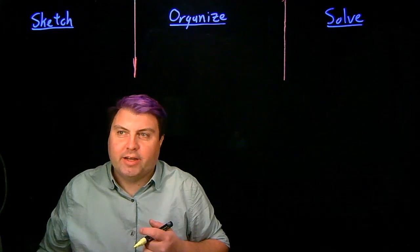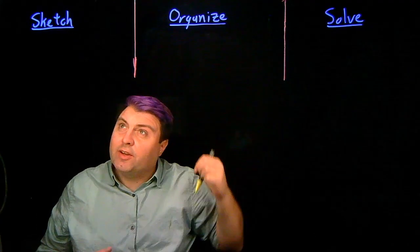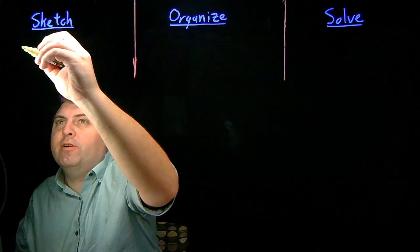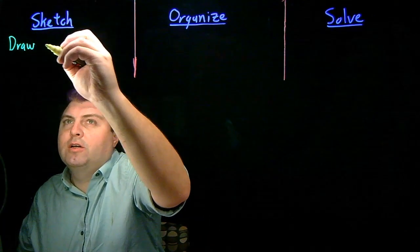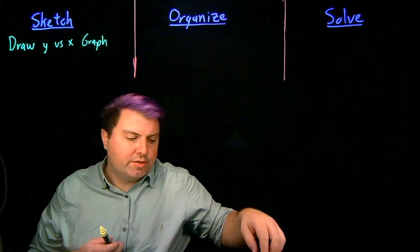When we have two-dimensional kinematics problems, we want to use the sketch-organize-solve method to start solving it. So in our sketch system, we want to draw a y-versus-x graph to show us the motion in a general sense.